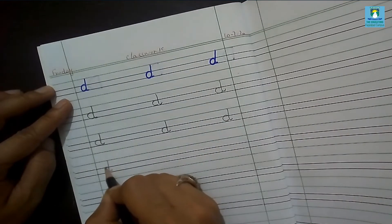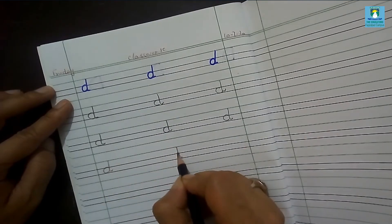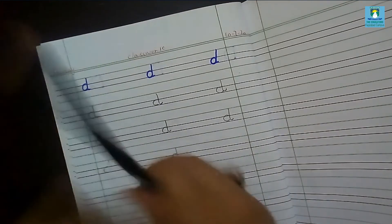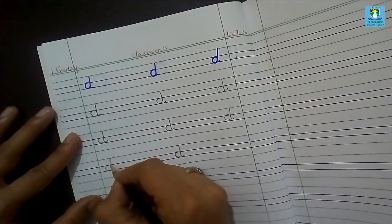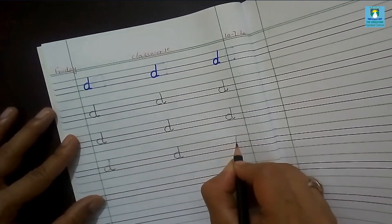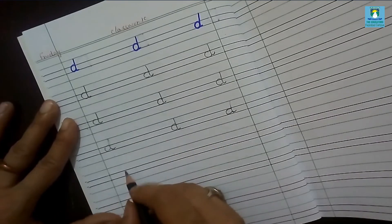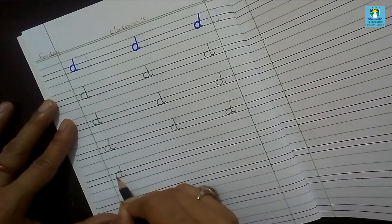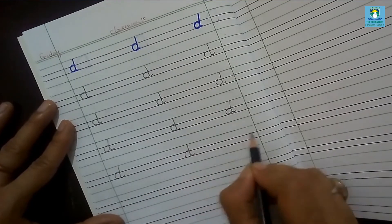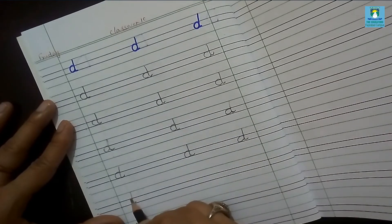It's a small letter D. What is it? Small letter D. Say it. Small letter D and its phonic is D.